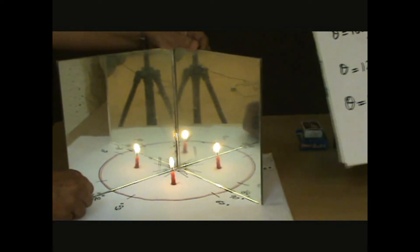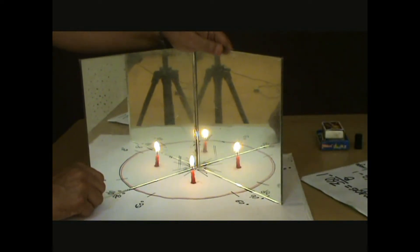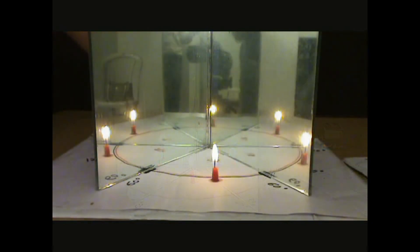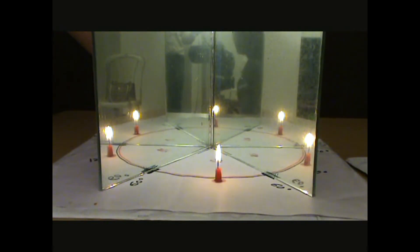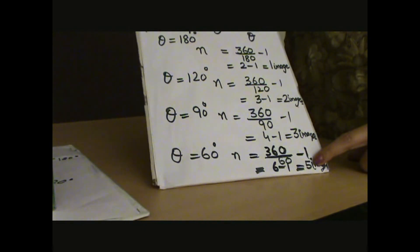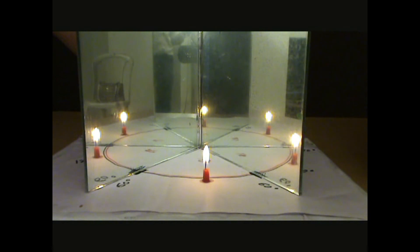Now let's try with 60 degrees. I will decrease the angle to 60 degrees. I will calculate with the formula and let you know how many images will be formed. According to the formula, the number of images formed is 5. Let us see — oh yes, 5 images are formed in the mirror also.